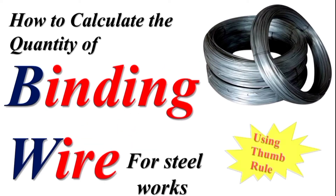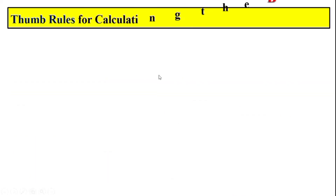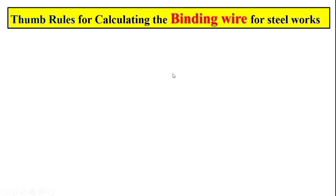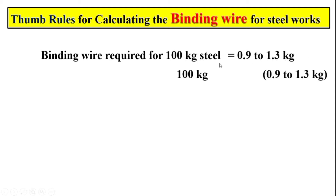This is our thumb rule by which we calculate the quantity of binding wire required for steel works. The thumb rule is: the binding wire required for 100 kg of steel is 0.9 to 1.3 kg. By using this approach we can easily find out the quantity of binding wire for any amount of steel work.